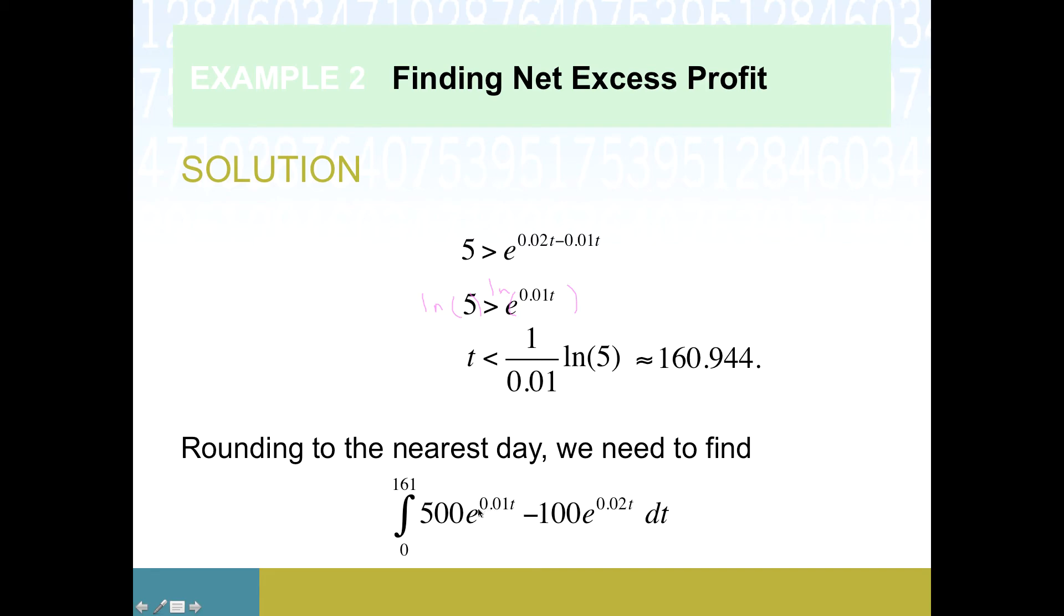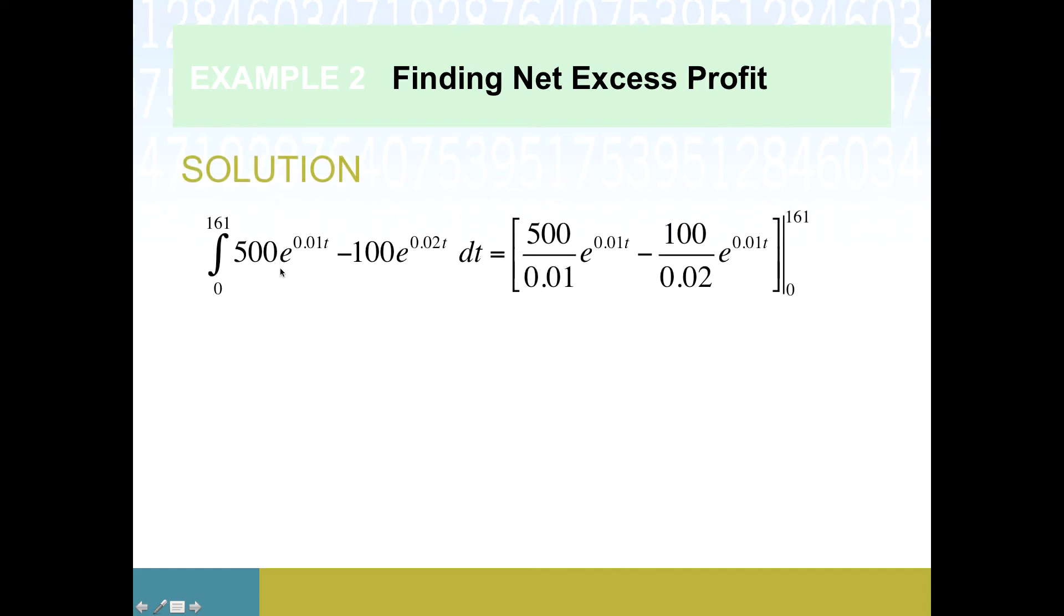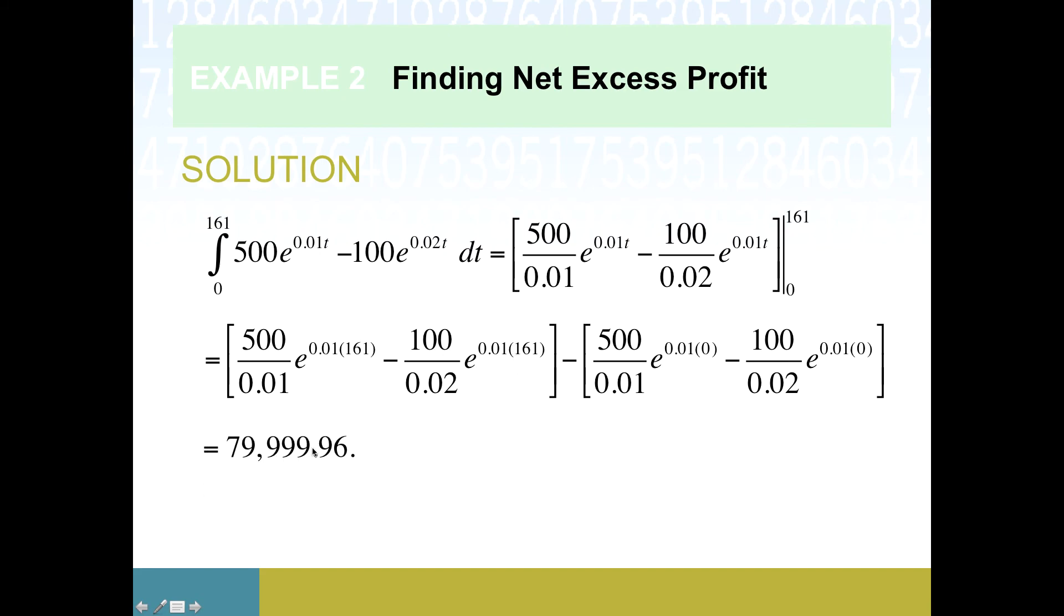So here we are. We've got a definite integral that we're actually capable of working with. And now we just got to go to town. So each of these two terms, you can separate over subtraction, which is handy. Each of these two terms has our exponential rule. So basically, we're going to end up with e to the whatever still, but we'll divide by that constant, that k. So we're going to have some extra big coefficients with these, this would be like 50,000, this would be something similar. And then we've got some exponents to manage. But this is something a calculator can help us out with. And we get actually pretty close to a nice round number, almost 80 grand.